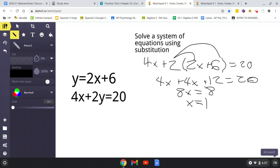So now we know what one of the values is. What do we do? We substitute what x equals into here to find what y equals. So we're going to put y equals 2 times 1, because x equals 1, plus 6.